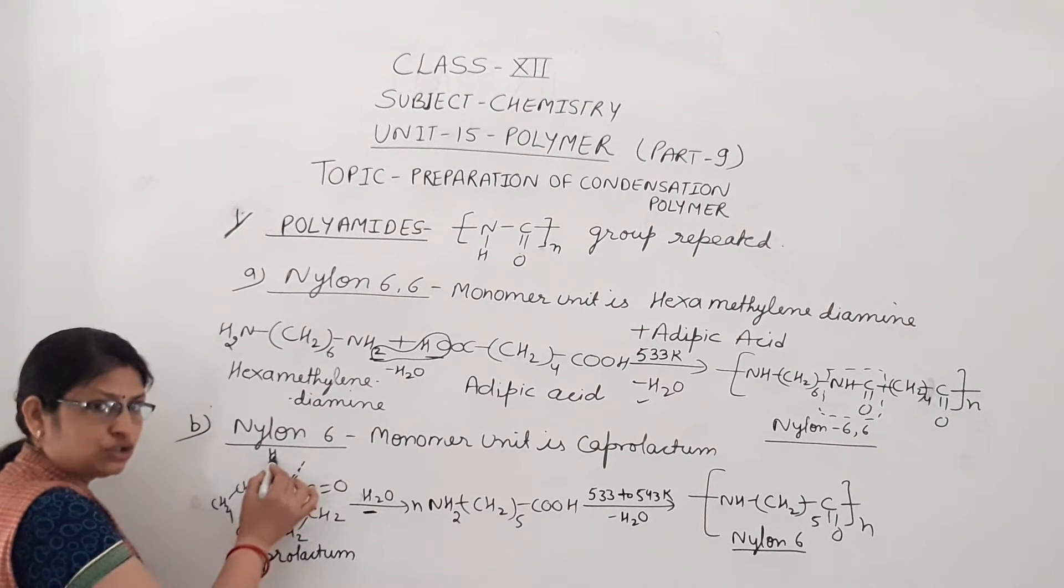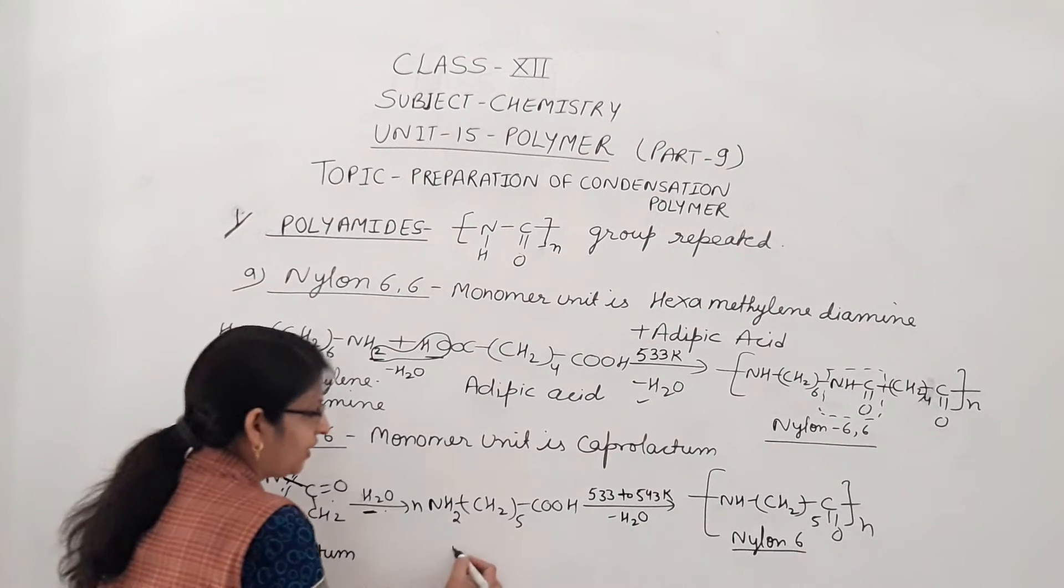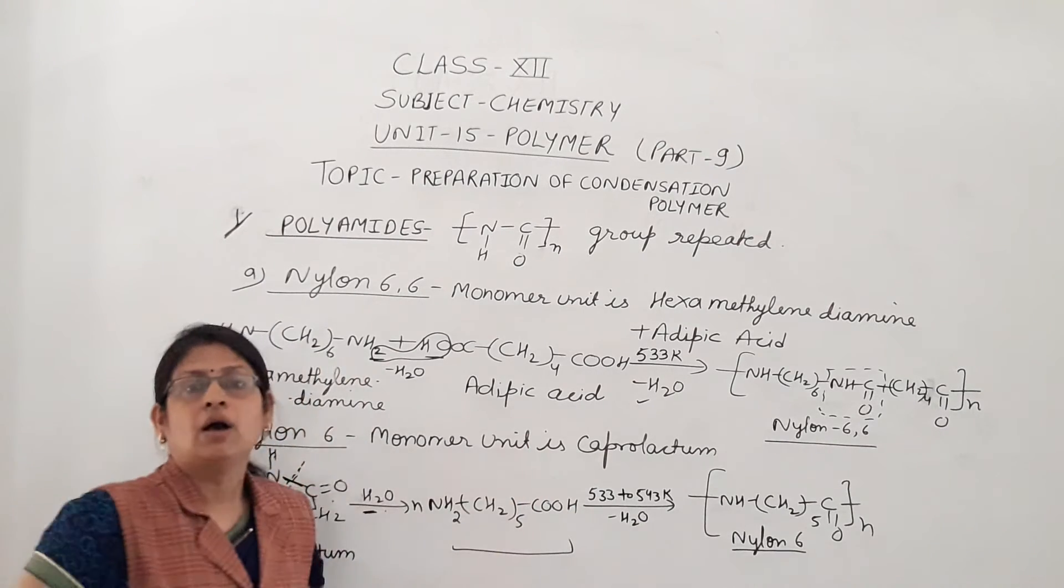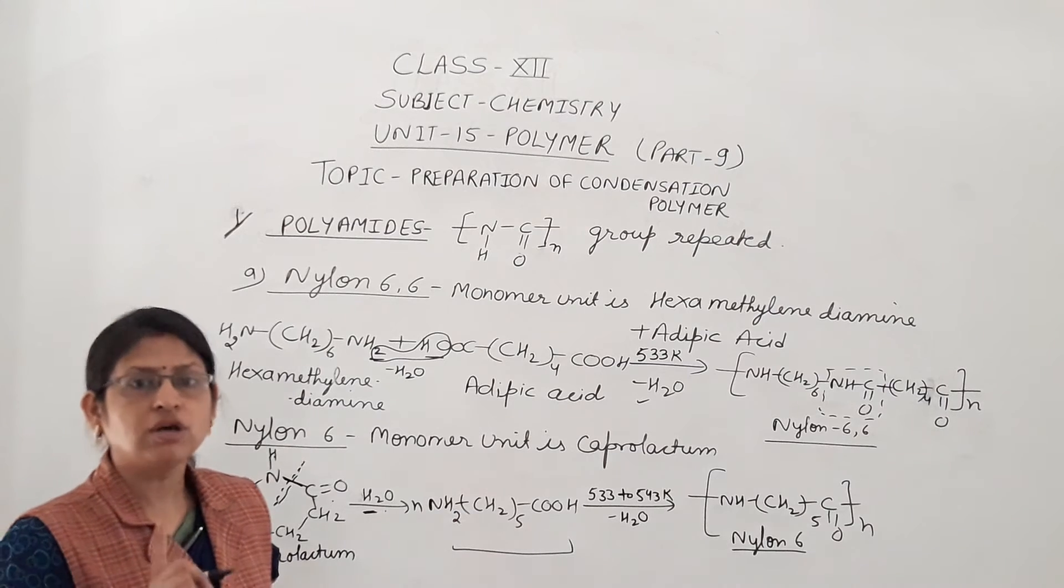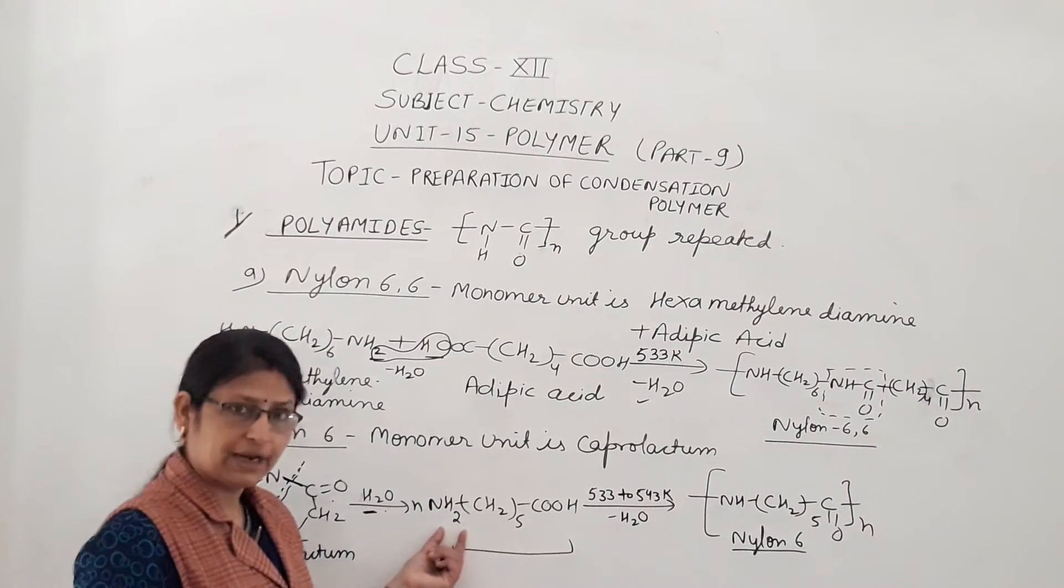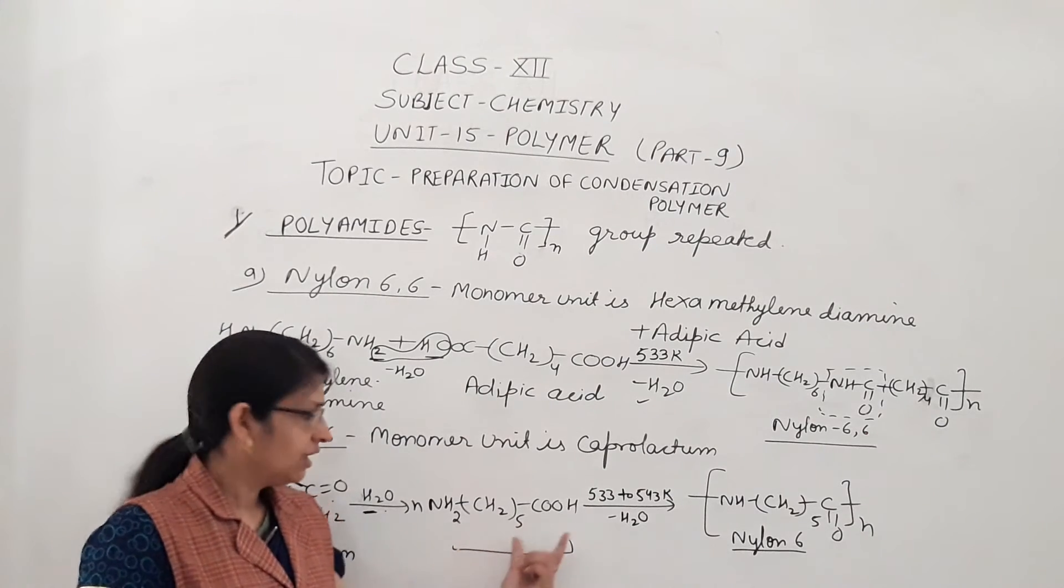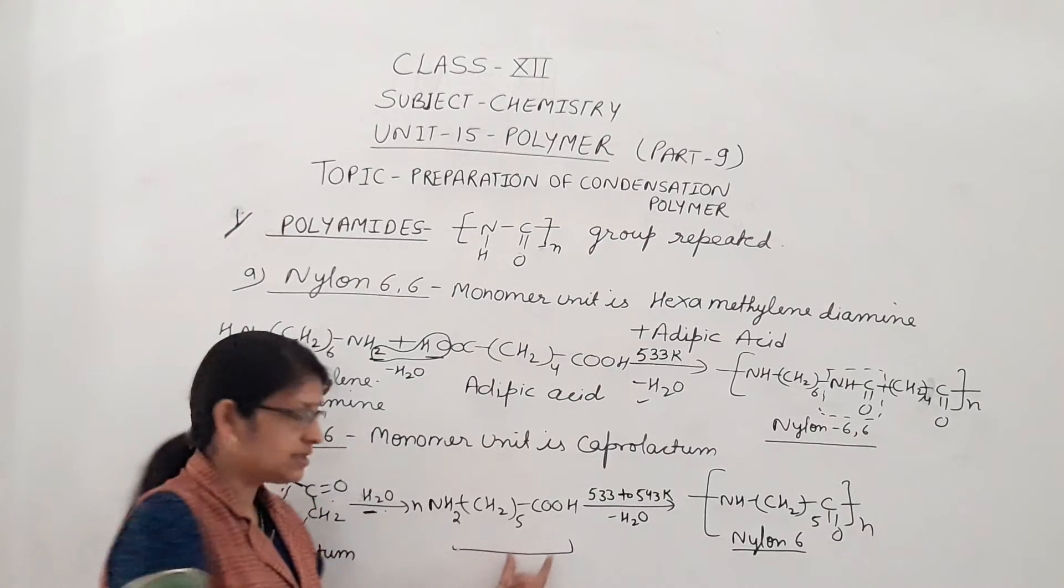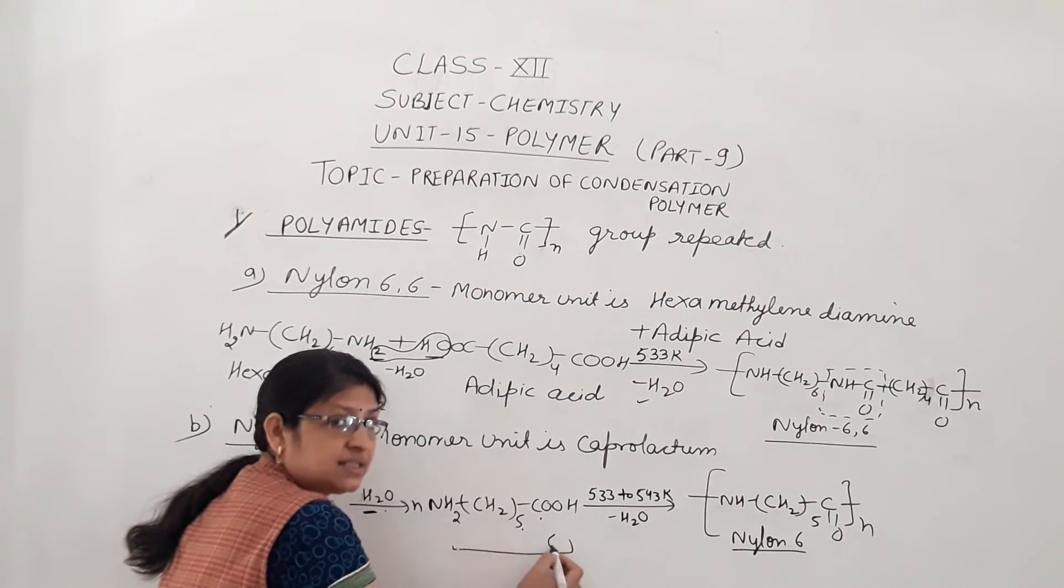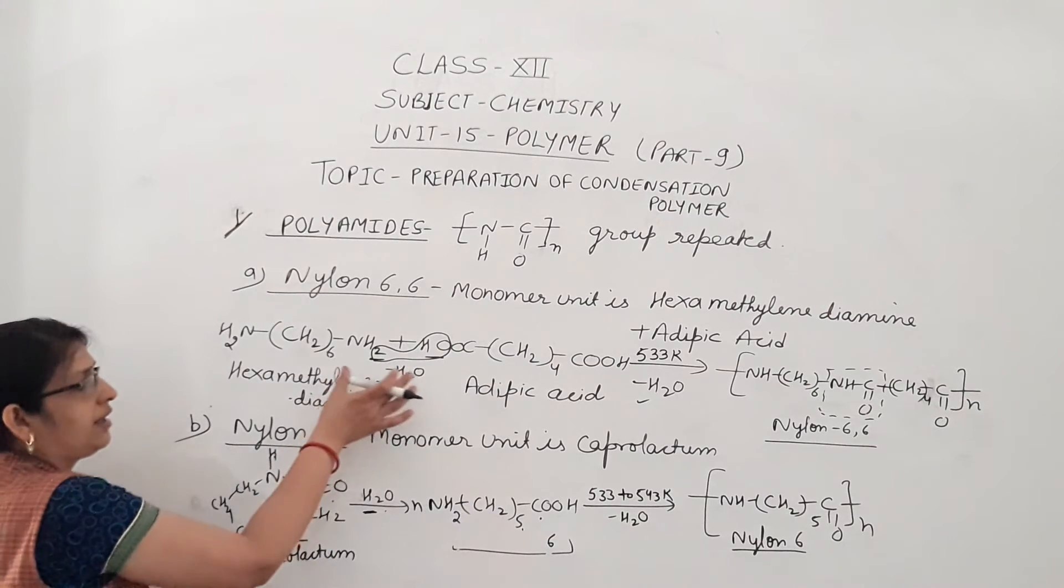And we get the homopolymer here because one monomer unit is present. That is NH2-(CH2)5-COOH. Now total number of carbons is 5 plus 1, that is 6. So it is known as nylon 6 only. But here two monomer units contain 6 carbons each, so it is known as nylon 6-6.